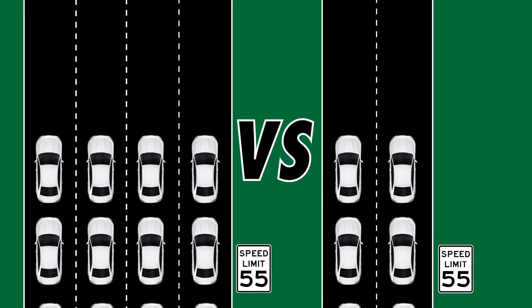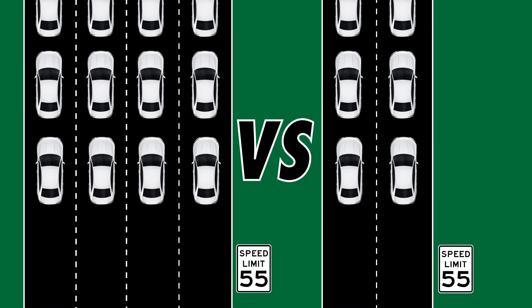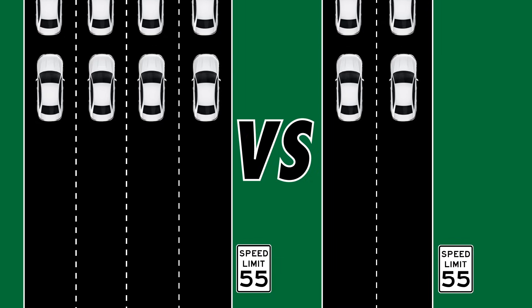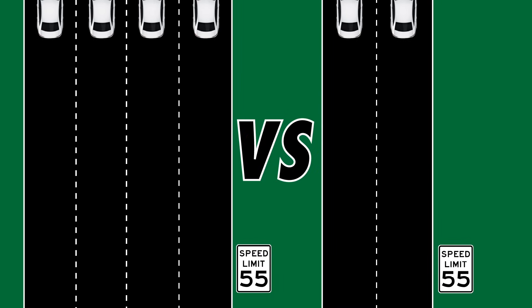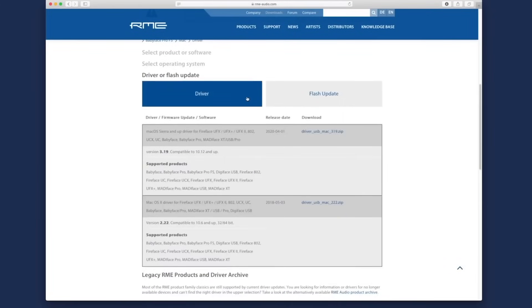Although one highway has more lanes than the other, the cars will travel at the same speed. Adding more lanes means more cars can travel within the same period of time, but each individual car still travels the same speed limit. For channel counts within the limitations of the given connection — whether USB 2.0, 3.0, or Thunderbolt — the latency you'll experience is determined by more factors than just the connection type. The processing speed of your computer will play a large role, and the drivers being used will play an equal or greater role.